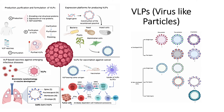Similarly, VLPs can be used to target cancer. In this case, the target gene is the tumor antigen. When VLPs are injected into the body, they will be taken up by dendritic cells, the antigen will be processed, and then it will activate the immune system to target the actual tumor present within the body.